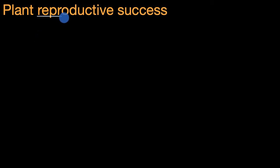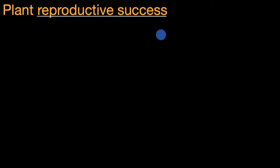We've already talked about reproductive success in other videos. It's related to the number of offspring an organism can have in its lifetime. And so in this video, we're going to think about strategies that plants use for reproductive success.